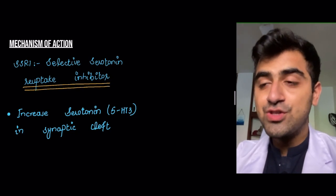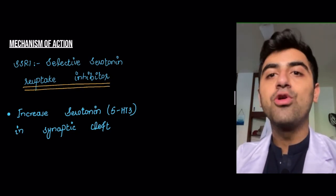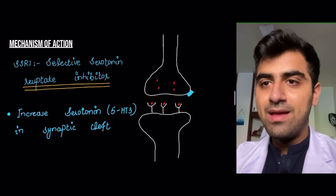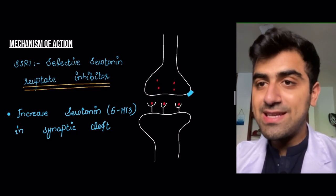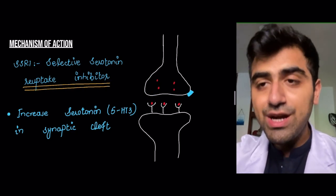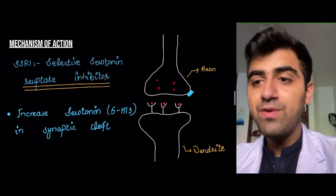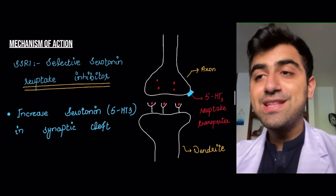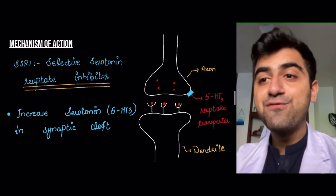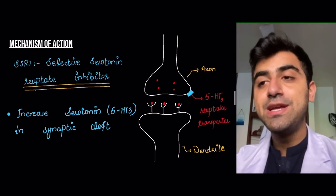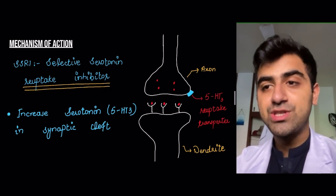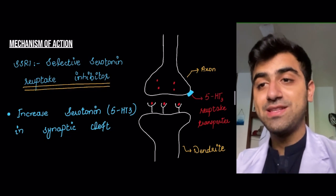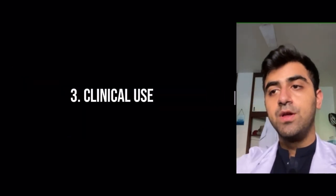The synaptic cleft is the gap between two neurons — the axon of one neuron and the dendrite of another neuron. There is a channel known as 5HT3, which is another name for the serotonin transporter. SSRIs block this channel; they inhibit this transporter.